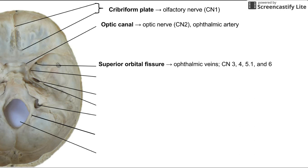Next is the superior orbital fissure, through which the ophthalmic veins, as well as cranial nerves 3, 4, 5, and 6 run. Remember that the trigeminal nerve splits up into three portions, so only the first portion of the trigeminal nerve goes through the superior orbital fissure.